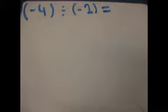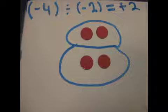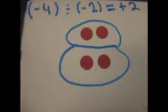In this equation, we are adding up groups of negative 2 until we get to negative 4. We added up 2 groups of negative 2 to get to negative 4. The answer is positive 2 because we added 2 groups.